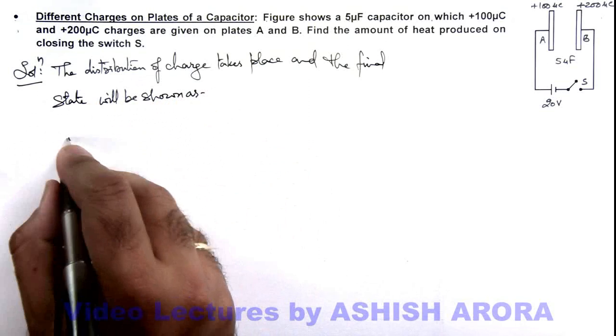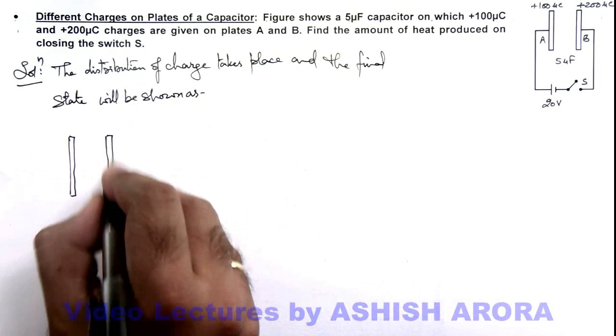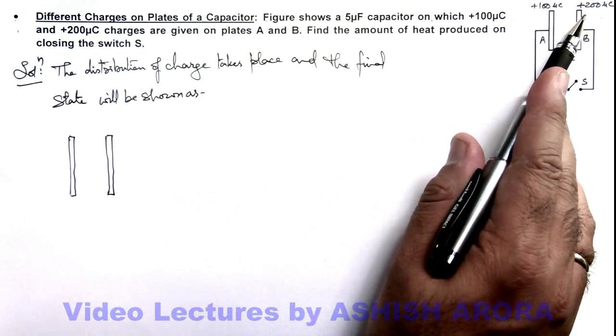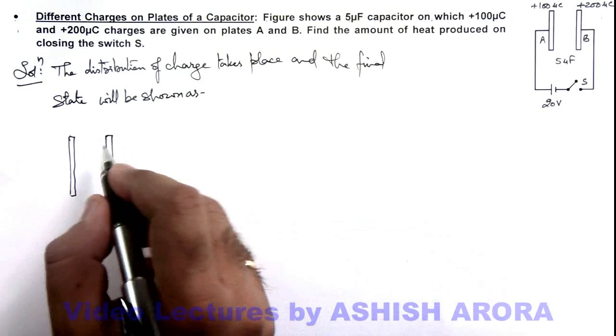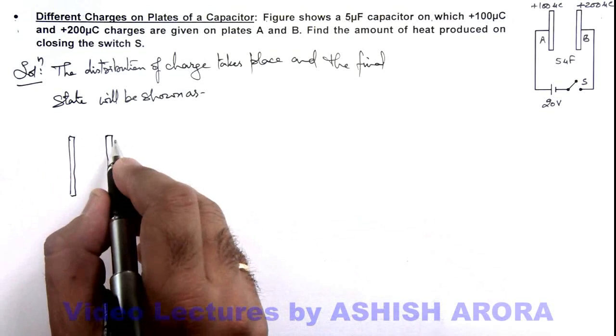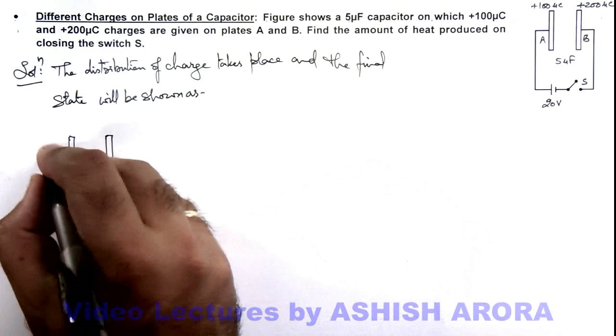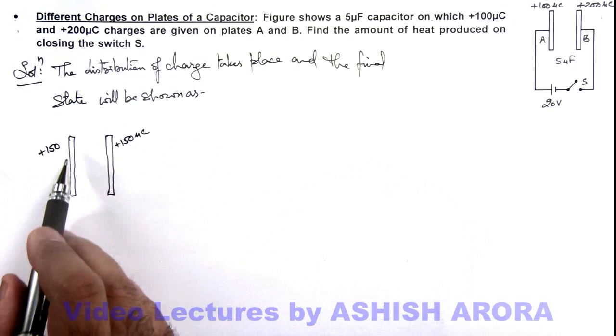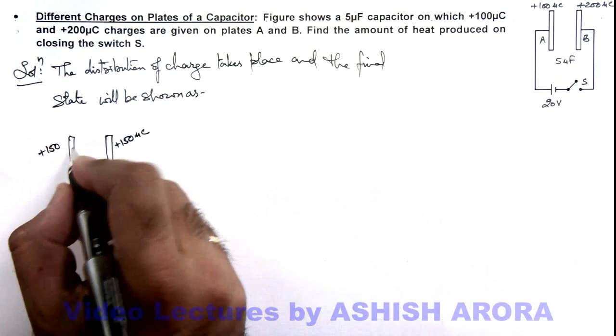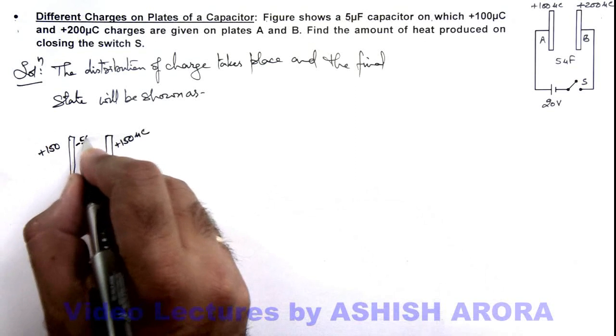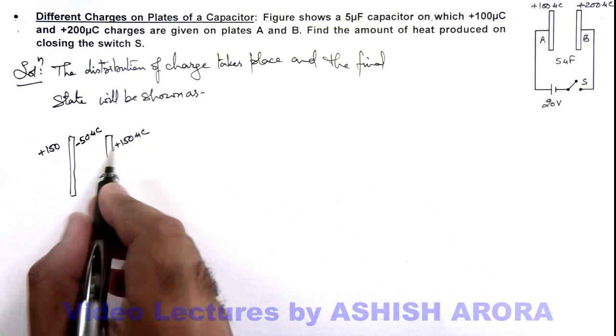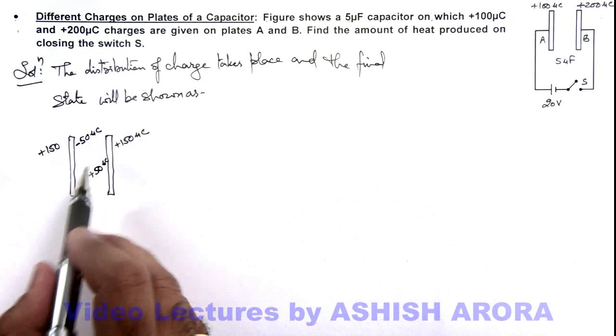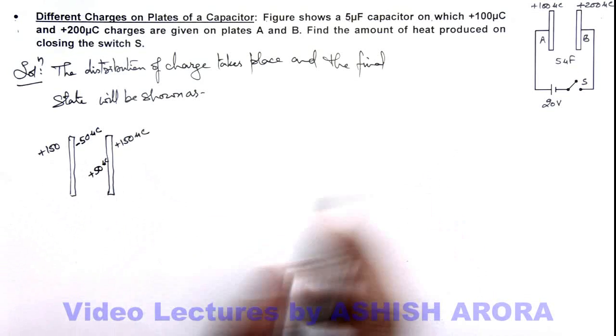Here we can see if these are the two plates of the capacitor, total charge on the two plates is 300 microcoulombs. We already studied that in a system of plates, on outer surfaces the charges are half of the total charge. So this will be plus 150, this will be plus 150 microcoulombs. On the left plate total charge is 100 microcoulombs, that means on its inner face it has to be minus 50 microcoulombs, and on the facing surface it has to be plus 50 microcoulombs. So these are the charges on the four surfaces of these plates after distribution.